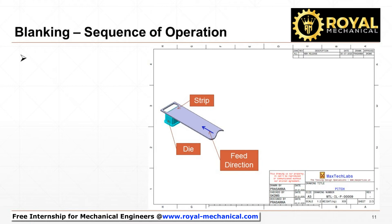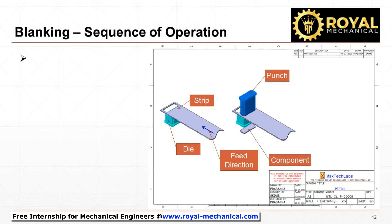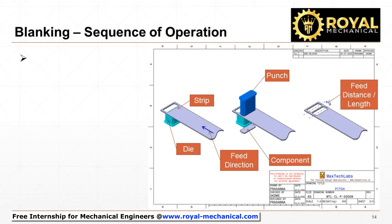Next, the raw material strip is advanced, which means it is moved forward in the feed direction. Again, the punch which is mounted on the press slide comes down and shears the strip to blank the component. Observe the condition of the strip after blanking. Observe the feed distance or feed length.